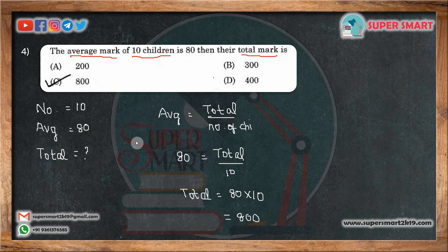If you write the formula, this will be easy to solve. Total divided by number of children gives the average. That's why we divide it.